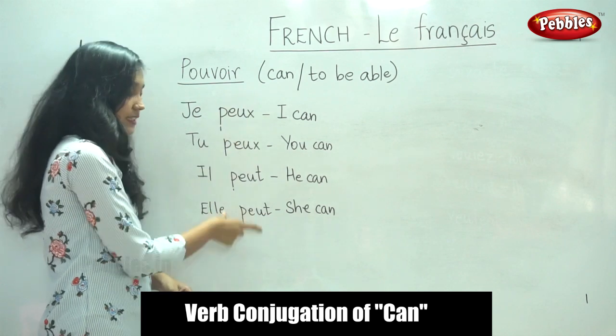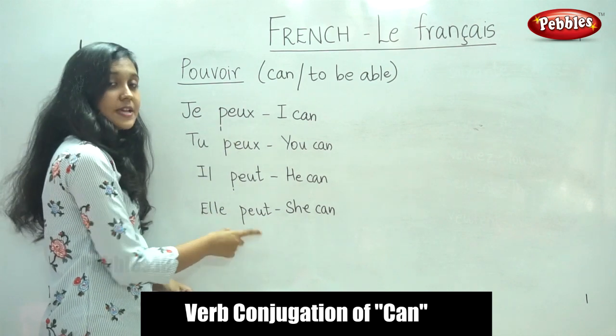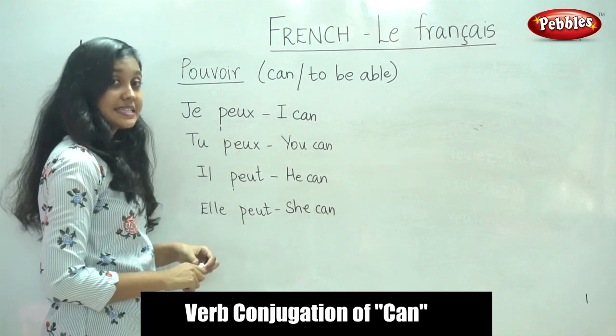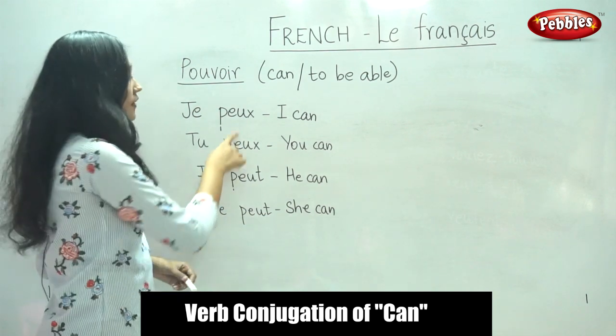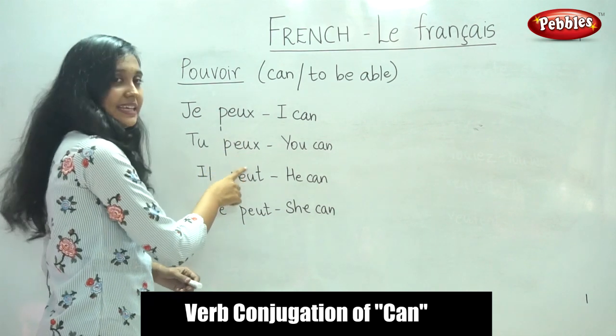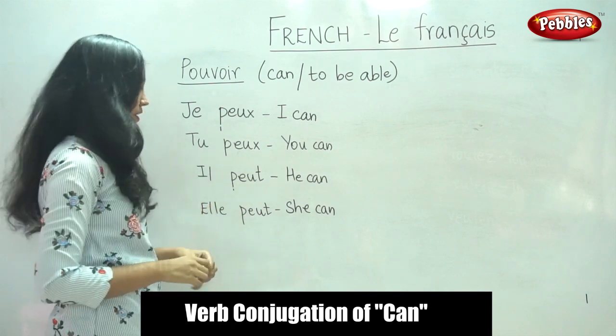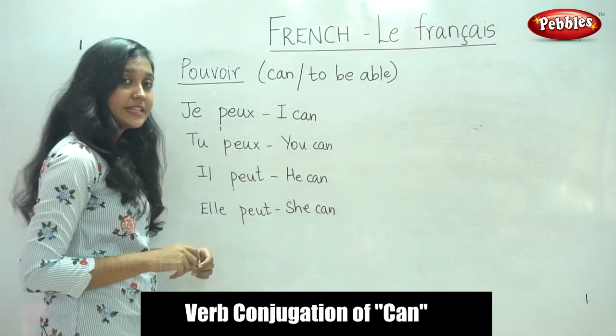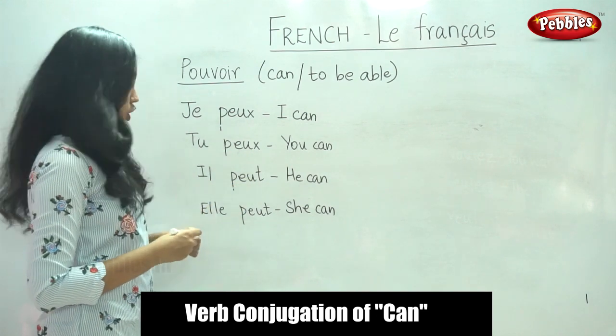JE PEUX, TU PEUX, IL PEUT, ELLE PEUT — all these four forms are pronounced the same. However, the spelling is different. I hope you are taking down your notes.